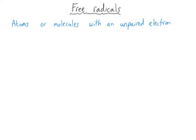Before we go into the specifics of the reaction and its mechanism, we need to look at free radicals. Free radicals are atoms or molecules with an unpaired electron. The one we're going to be looking at in this mechanism — the most common one — is the chlorine free radical, represented by a little dot. But you can have all sorts of free radicals: bromine, fluorine, iodine.